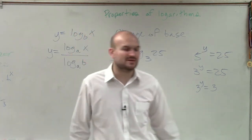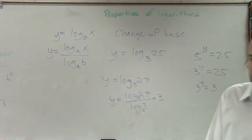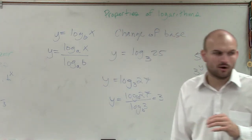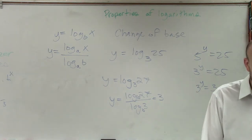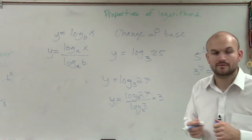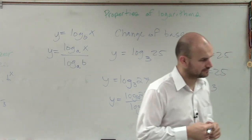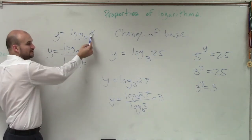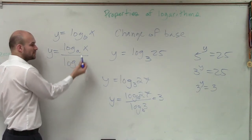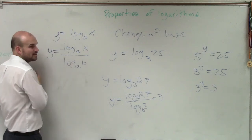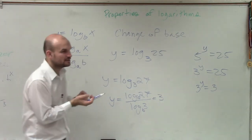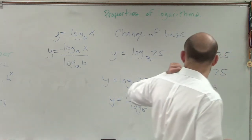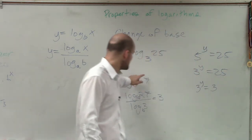When you have problems calculating a log, a lot of them you can do without a calculator — just see what the logarithm means, or you can apply the change of base formula. All it's saying is: if you have a logarithm, take the log of the value over the log of the base. Your calculator is defaulted at base 10, so you can just plug in log of x over log of b — in this case, log of 27 divided by log of 3.